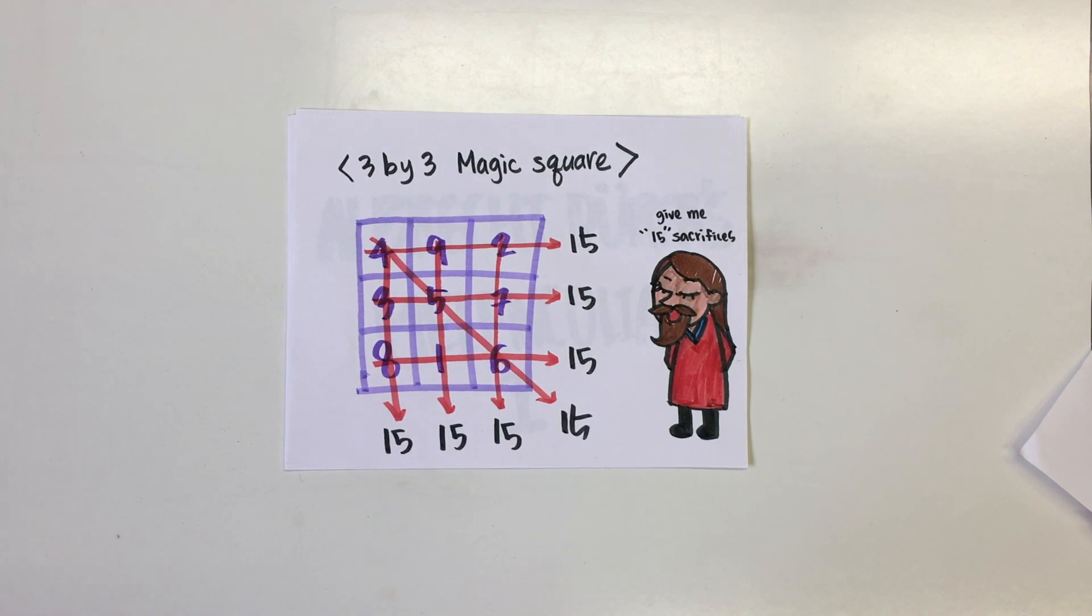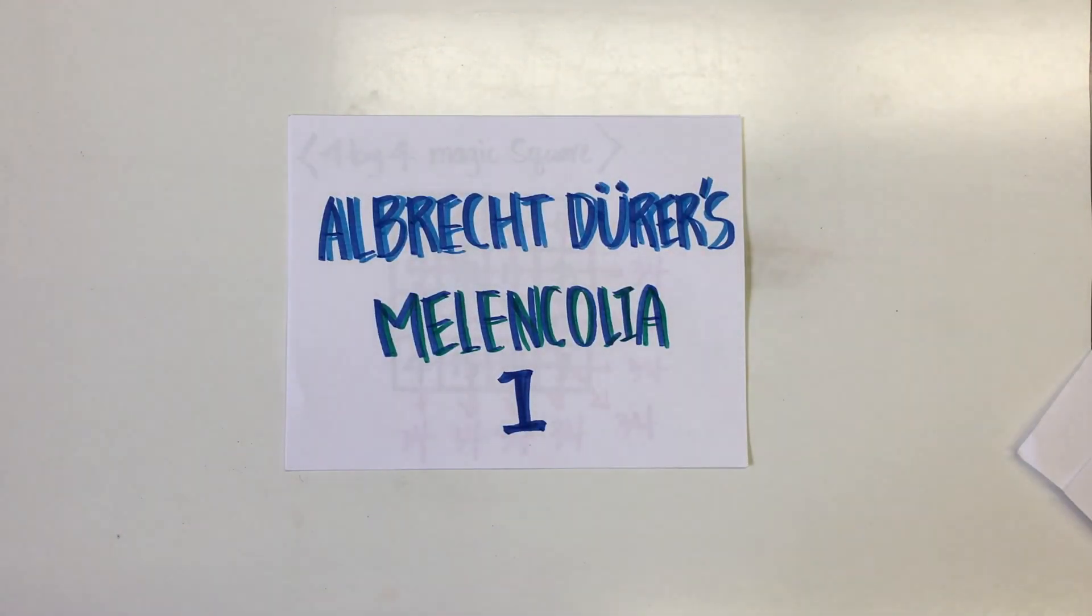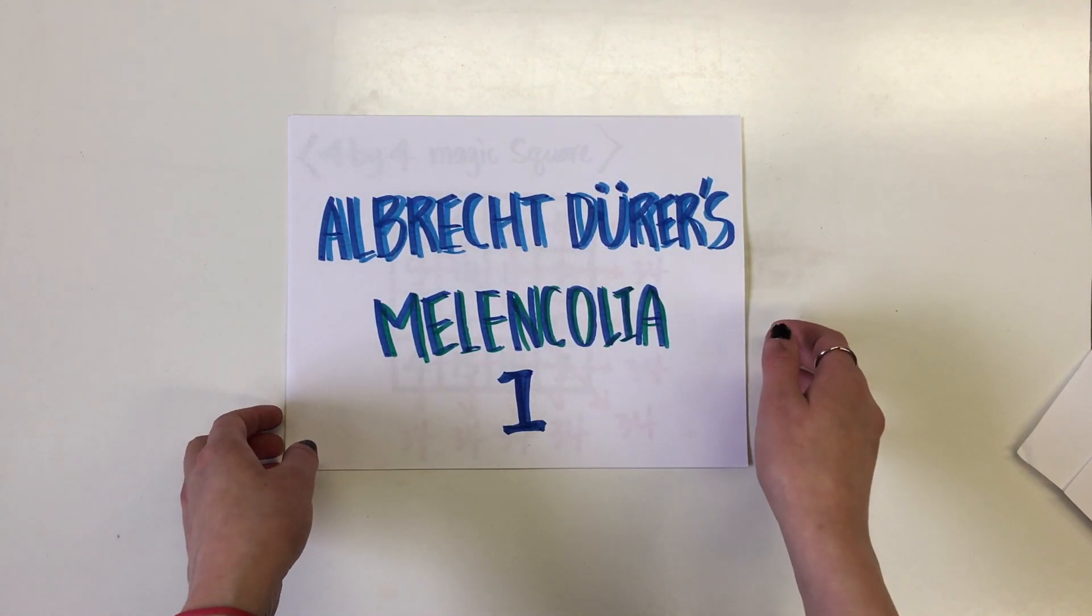Another example of a magic square is found in Albrecht Dürer's Melancholia 1. The engraving depicts an enigmatic and gloomy female figure thought to represent melancholia, the feeling of sadness and gloom.